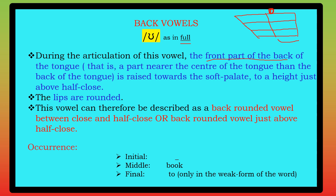The front part of the back of the tongue — what height of the tongue? Close, but not exactly close. Half-close, just above the half-close position. So it is between close and half-close position — just above the half-close. The lips are exactly rounded. So it can be described as a back rounded vowel just above the half-close position.